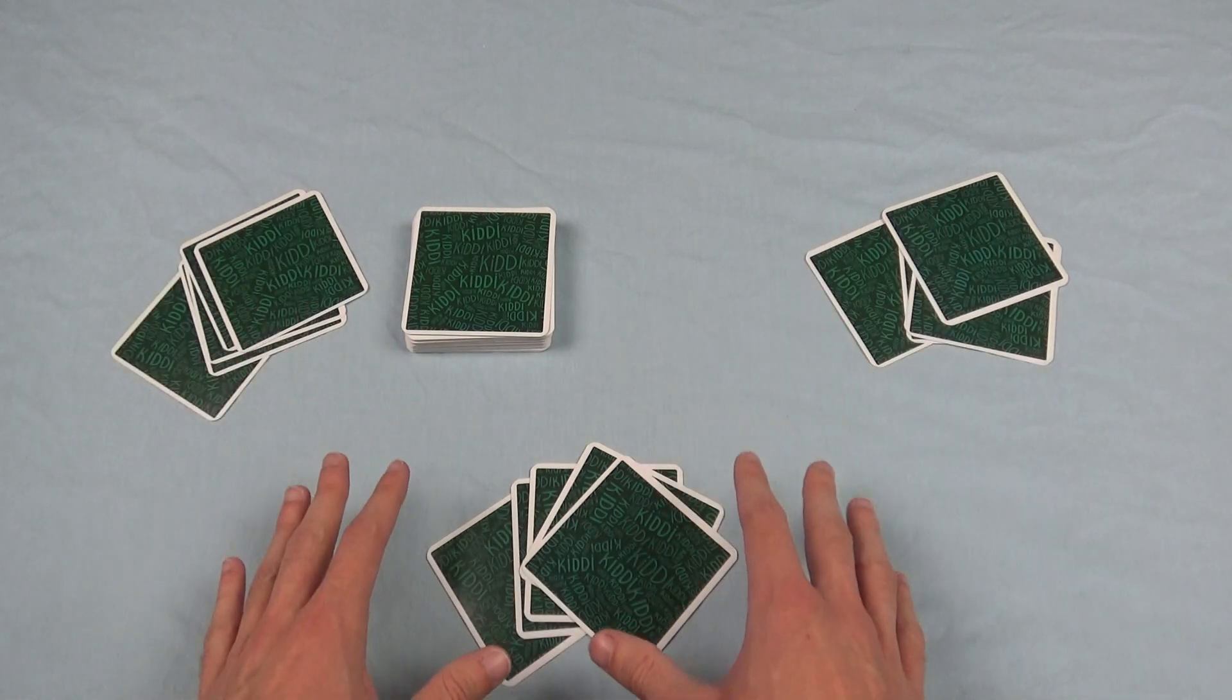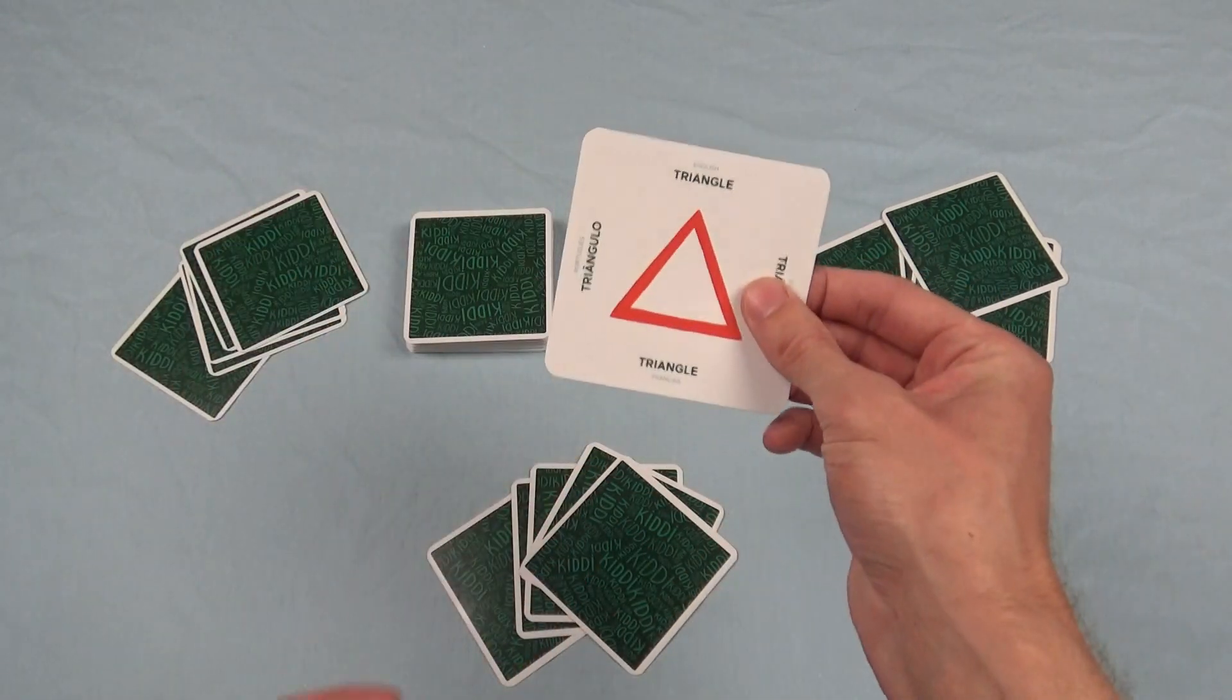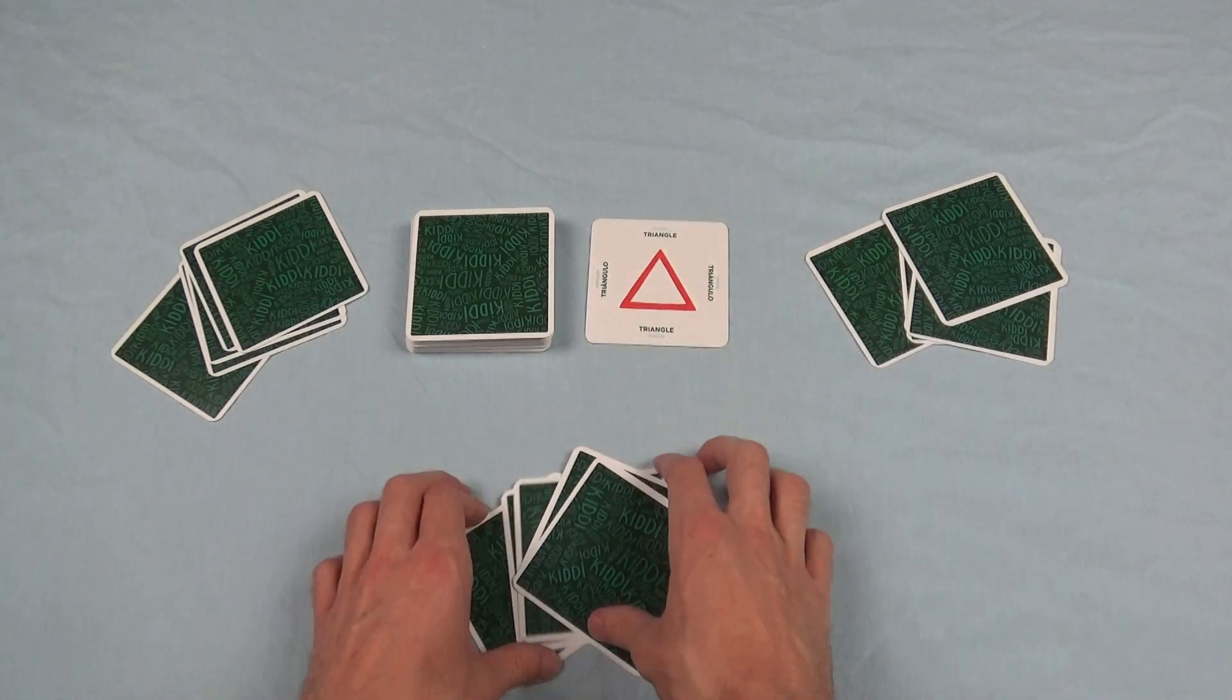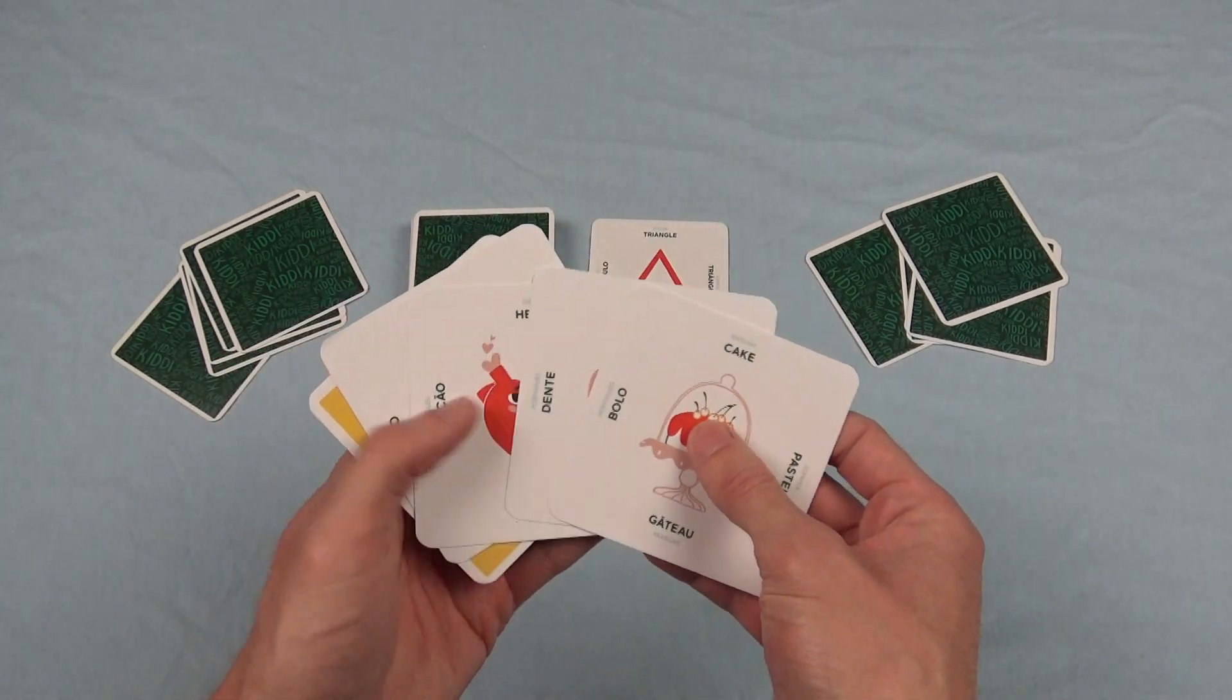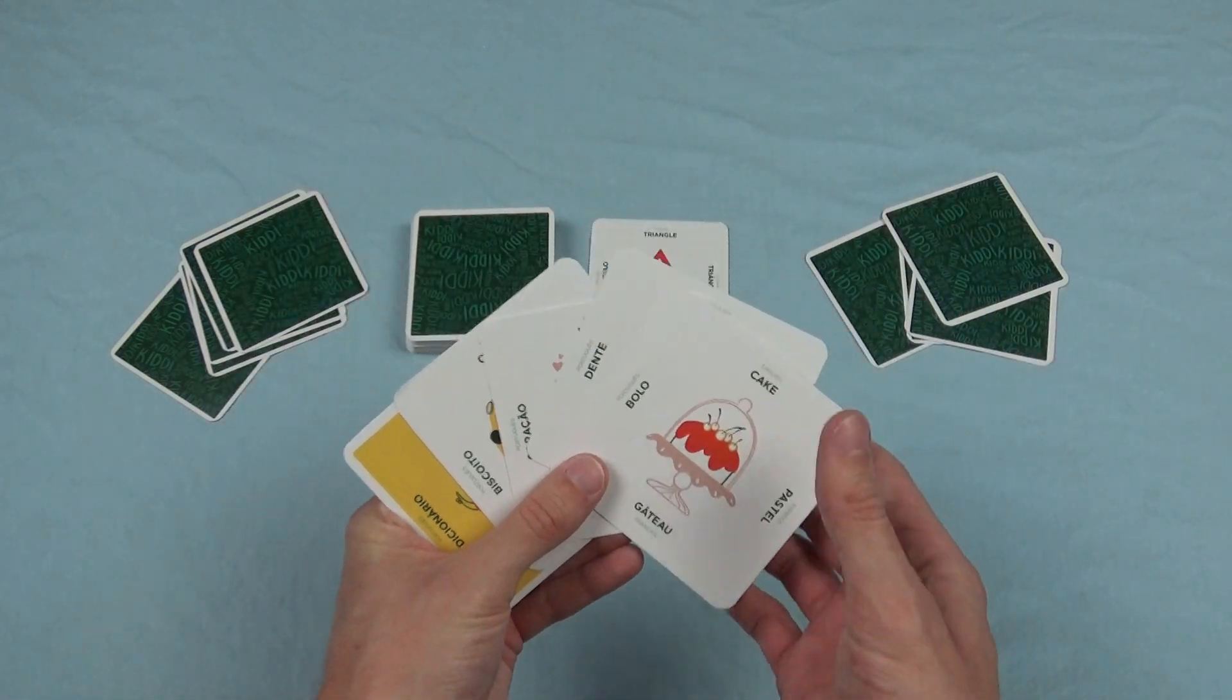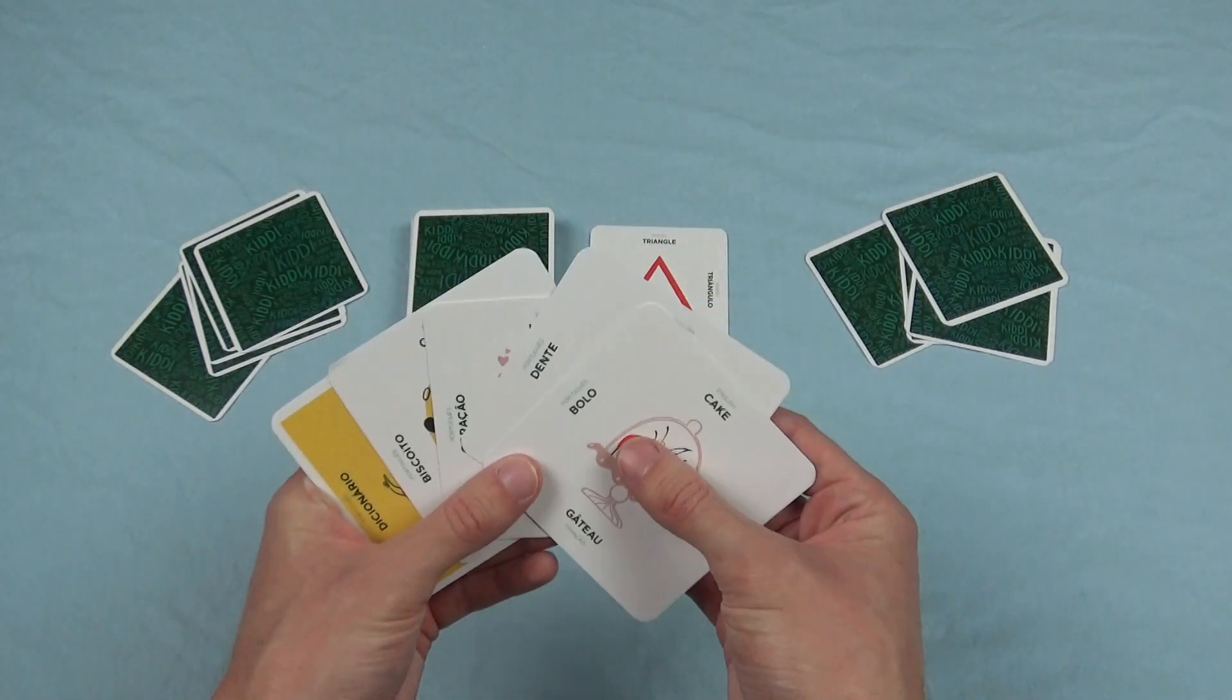Once every player has five cards, then you're going to return the card face-off, the first card on top of the deck, and you're going to look at it, and you're going to look at your card. The goal of the game is to get rid of your cards by associating them with the card in the middle here.